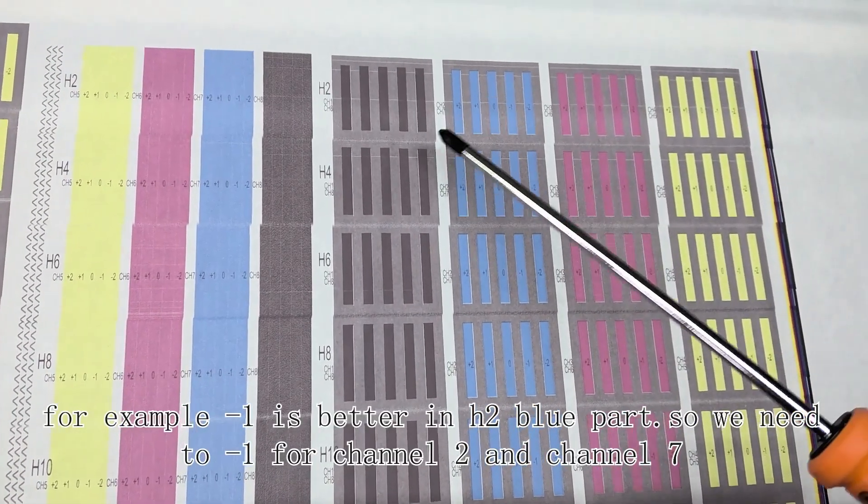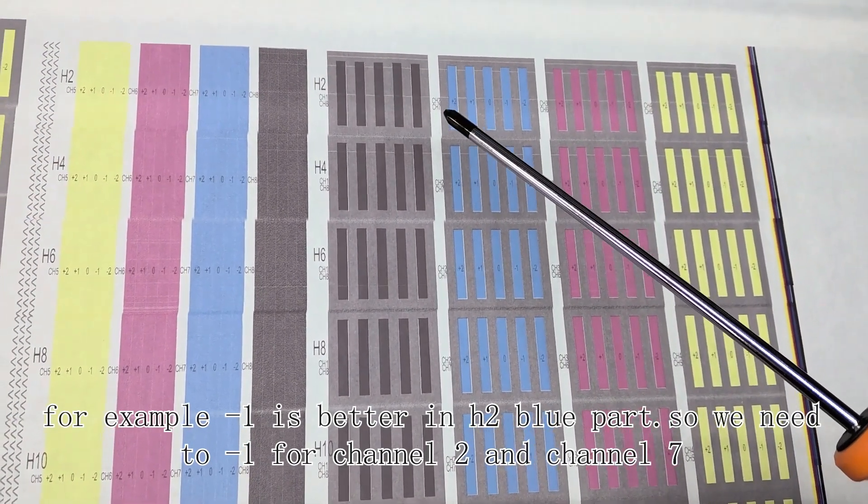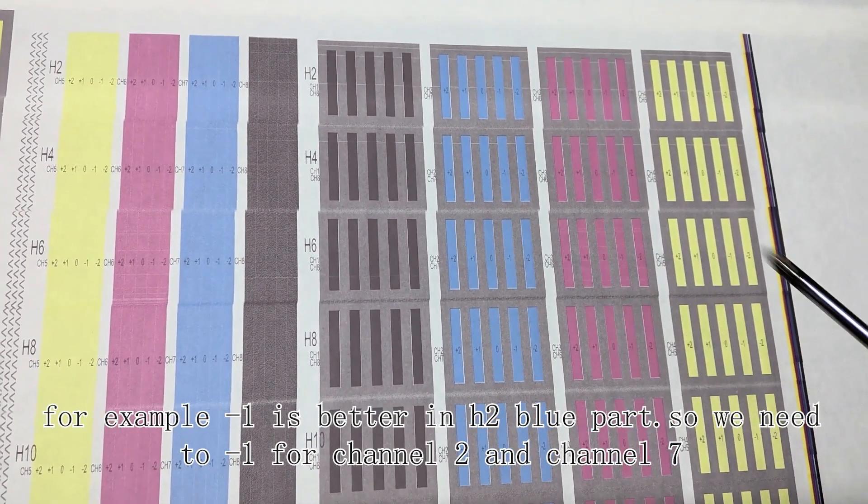For example, minus one is better in the H2 blue part, so we need to minus one for channel two and channel seven.